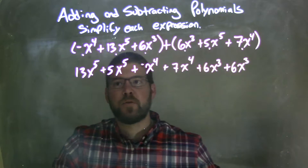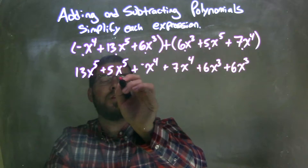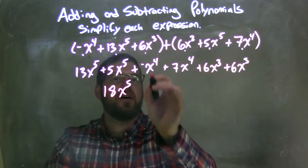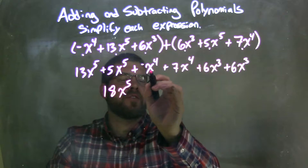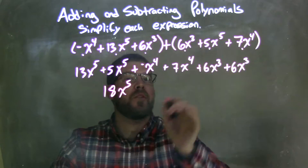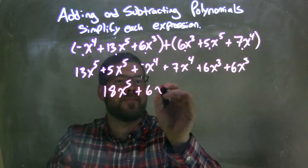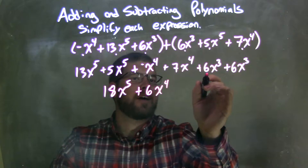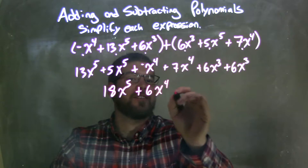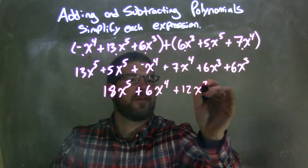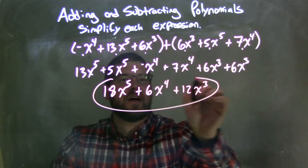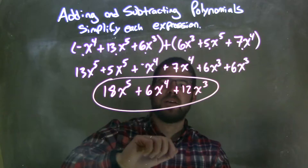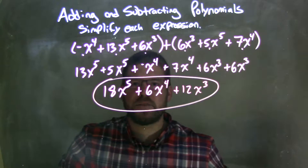Now we can simplify. 13x to the fifth plus 5x to the fifth is 18x to the fifth. Then negative x to the fourth plus 7x to the fourth is 6x to the fourth. Then 6x to the third plus 6x to the third is 12x to the third. Our final answer is 18x to the fifth plus 6x to the fourth plus 12x to the third.